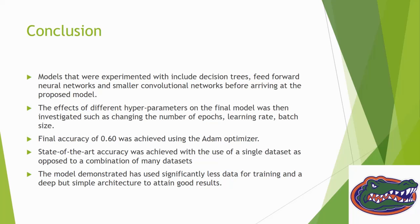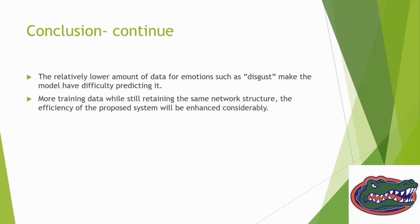The model demonstrated has used significantly less data for training but a simple architecture to obtain good results. One issue faced is the relatively lower amount of data for emotions such as disgust makes the model have difficulty predicting it. That's why it's getting confused between disgust and angry, having less number of images in the dataset. More training data while retaining the same network structure would enhance the efficiency of the proposed system considerably.